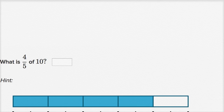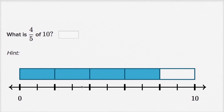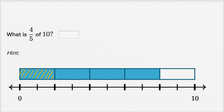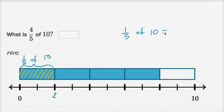Let's do one more. What is four-fifths of ten? I encourage you to pause the video and try to think about it. We see here on the number line they've taken from zero to ten and split it into five equal sections. This right over here is one-fifth of ten. If you go from zero to ten and divide it into five equal sections, this is one-fifth of ten. And we see that number is two — two is one-fifth of ten.